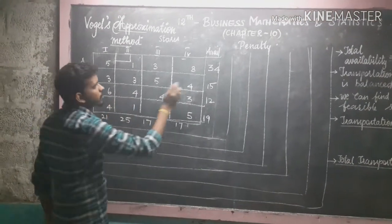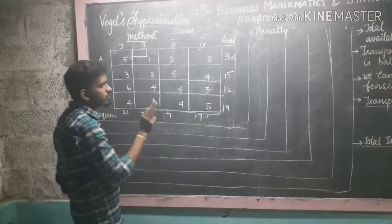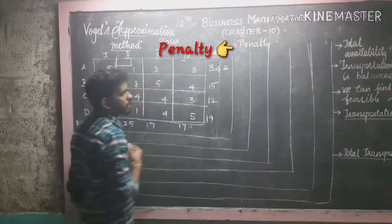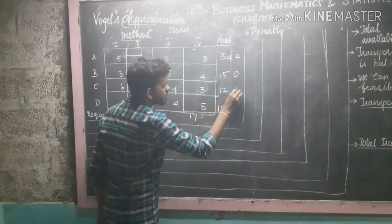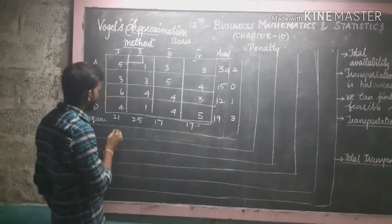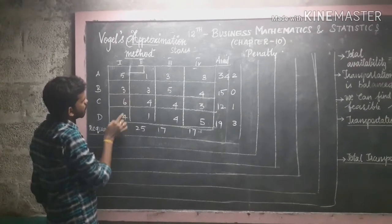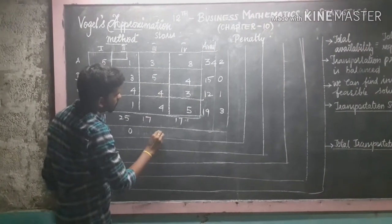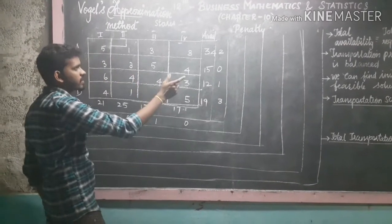The first step is to calculate the penalty. To find the penalty, we take the least two values in each row or column and subtract them. For example: 3 minus 1 equals 2, so the penalty is 2. Next, 3 minus 3 equals 0. Then 4 minus 3 equals 1. For columns: 4 minus 3 equals 1, 1 minus 1 equals 0, 4 minus 3 equals 1, and 3 minus 3 equals 0. This difference is called the penalty.